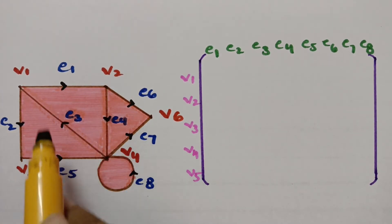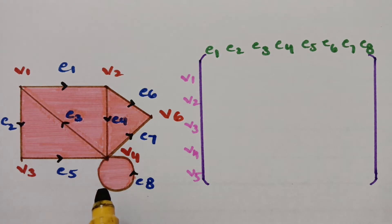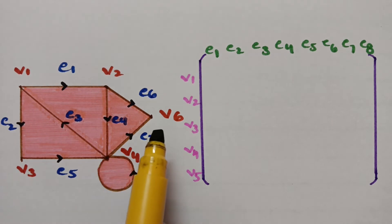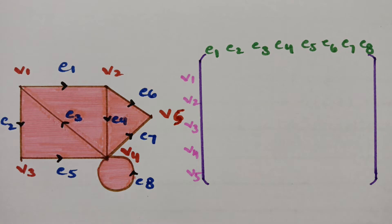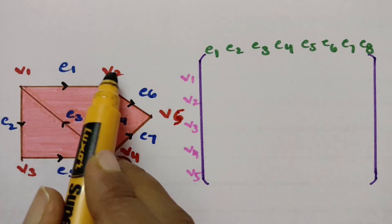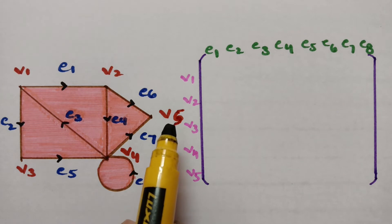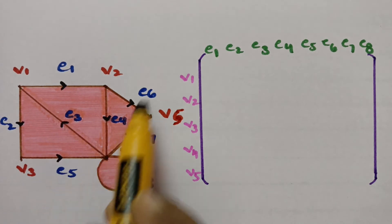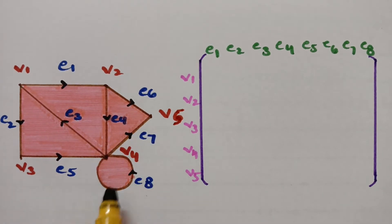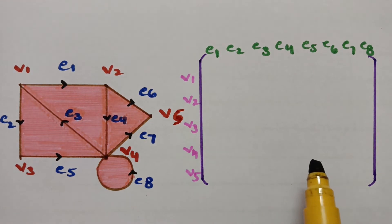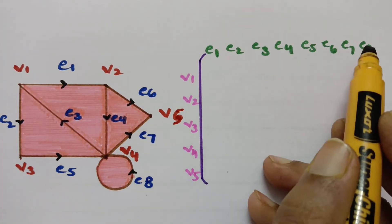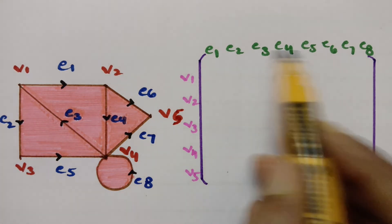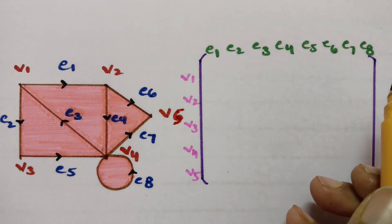Here is the second graph. When we see the graph, we count how many vertices there are: v1, v2, v3, v4, and v5 — total 5 vertices. And the edges: e1, e2, e3, e4, e5, e6, e7, e8 — total 8 edges. To represent the incidence matrix, all edges go on top as columns and v1 through v5 are the rows.